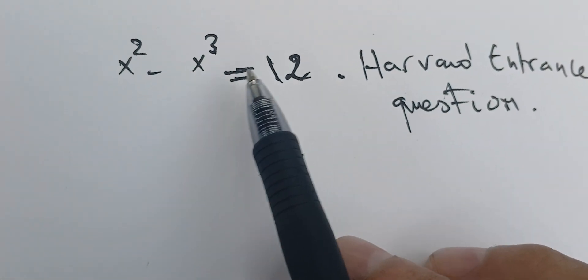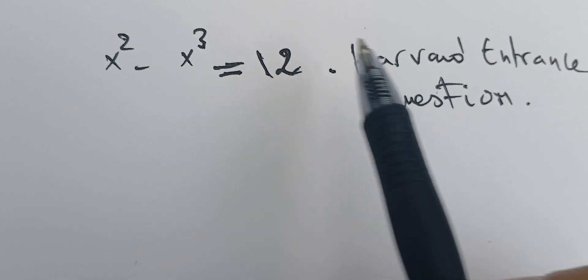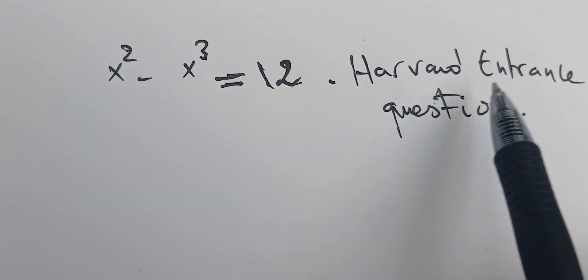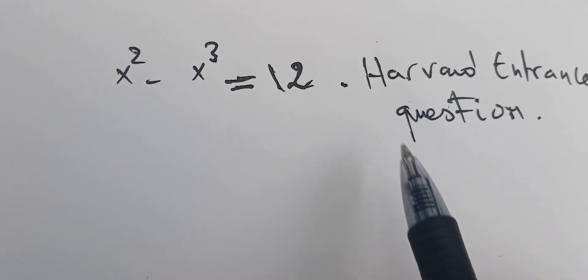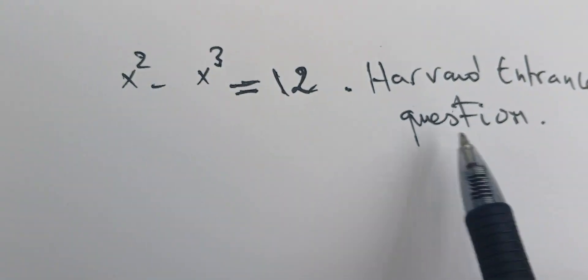In this video we're going to solve the equation x squared minus x cubed equals 12. This is a Harvard entrance exam question. It's a math question and most of the time we don't have enough time when dealing with this in the exam.